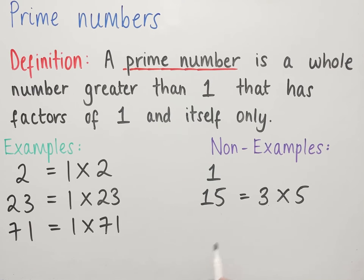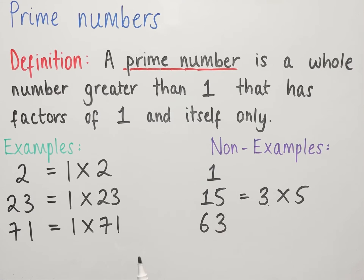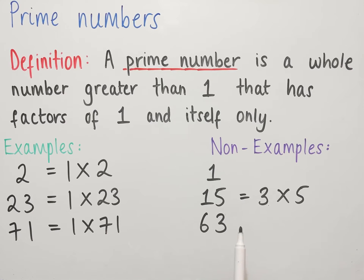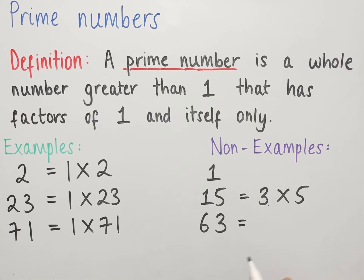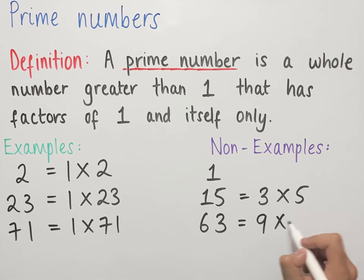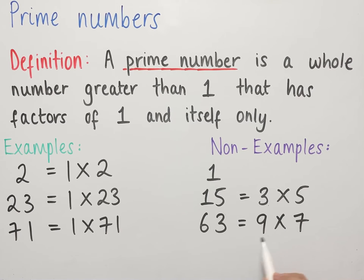Another example: if we look at 63, it has factors of 1, 3, 7, 9, 21, and 63. Since it has factors of 1 and itself as well as other numbers, 63 is not a prime number. For example, 63 can be written as 9 times 7, and these are not 1 and 63 — they are other numbers.